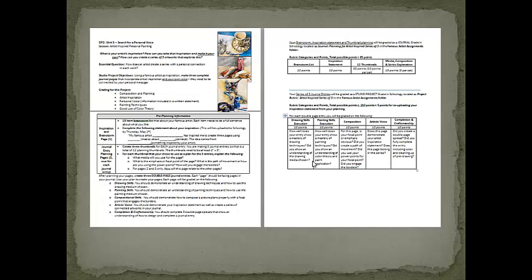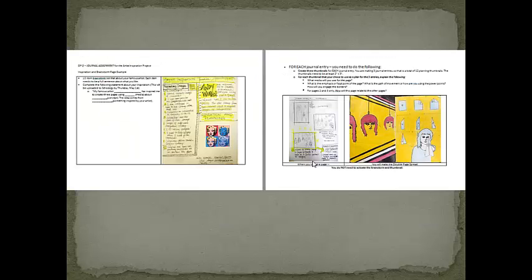On the back of that piece of paper there are rubrics, and you are welcome to look those over — that gives you an idea how I'll be grading. The second page in your packet is an example of what I want your planning page, your brainstorm page to look like, a planning page, and an actual journal page. You have a copy of that — keep it with you. It's also here on this PowerPoint.